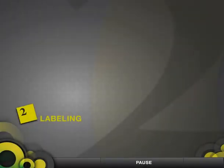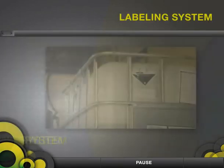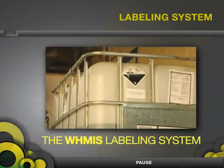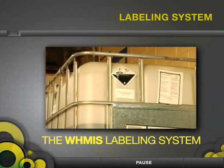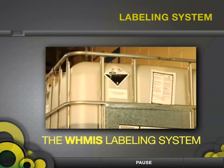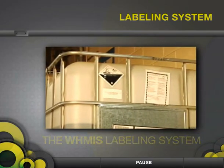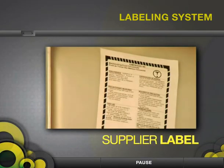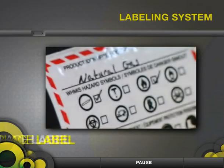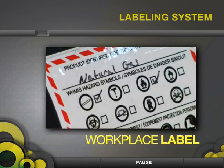Labeling. There are two different labels used to identify controlled products: the supplier label, which is applied by the manufacturer or supplier, and the workplace label.